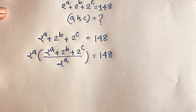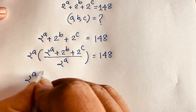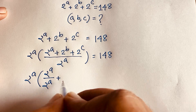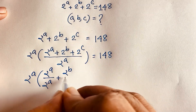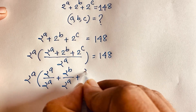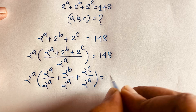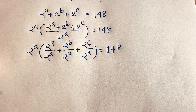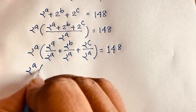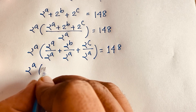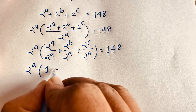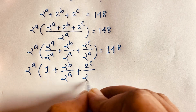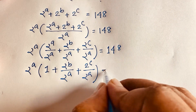Now in this expression I can say it will be 2^a times, this divided by this — 2^a over 2^a. Solving step by step, here is 2^a plus 2^c over 2^a is equal to 148. The 2^a cancels, giving us 1 plus 2^b over 2^a plus 2^c over 2^a, and here is 148.